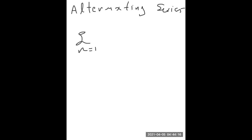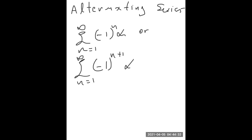Alternating series are of the form: sum from n=1 to infinity of (-1)^n times a_n, or sum from n=1 to infinity of (-1)^(n+1) times a_n, where a_n is positive. The starting point doesn't really matter; it can start from any given number. If we have a sequence that alternates sign, that counts as well and we can bring it into this form.